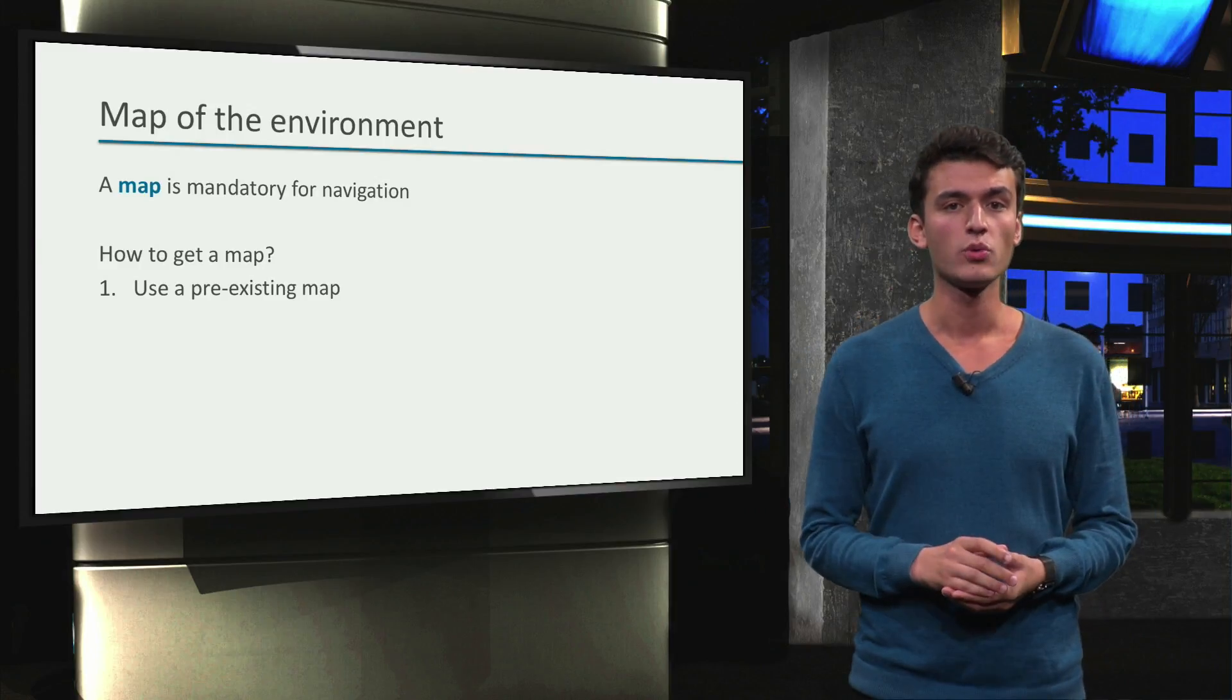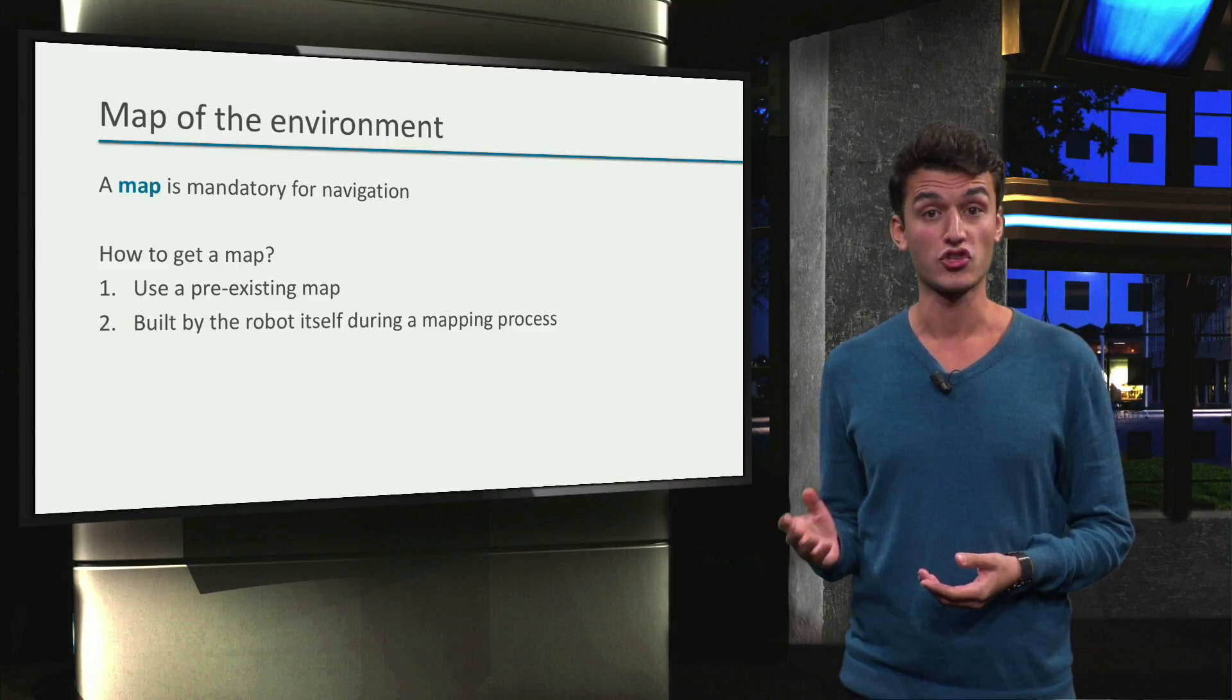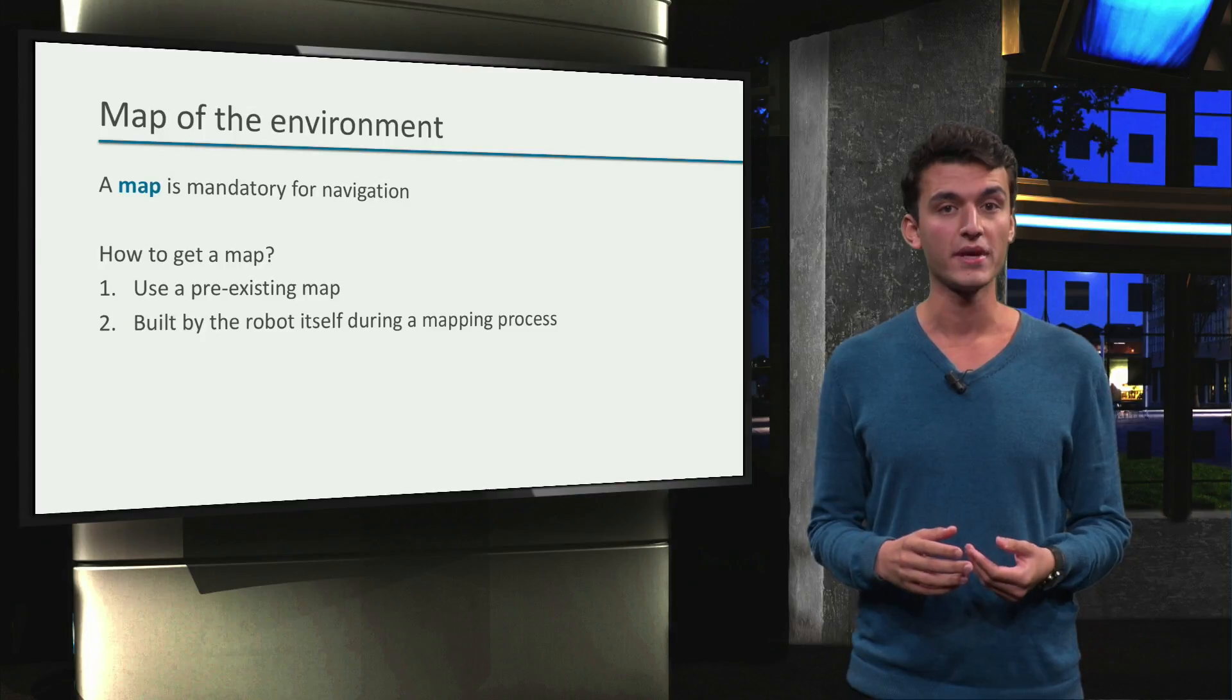In a lot of robotic applications, we will not have a pre-existing map. In that case, we will need to make a map ourselves, using the robot of course. The process of creating a map is called mapping.